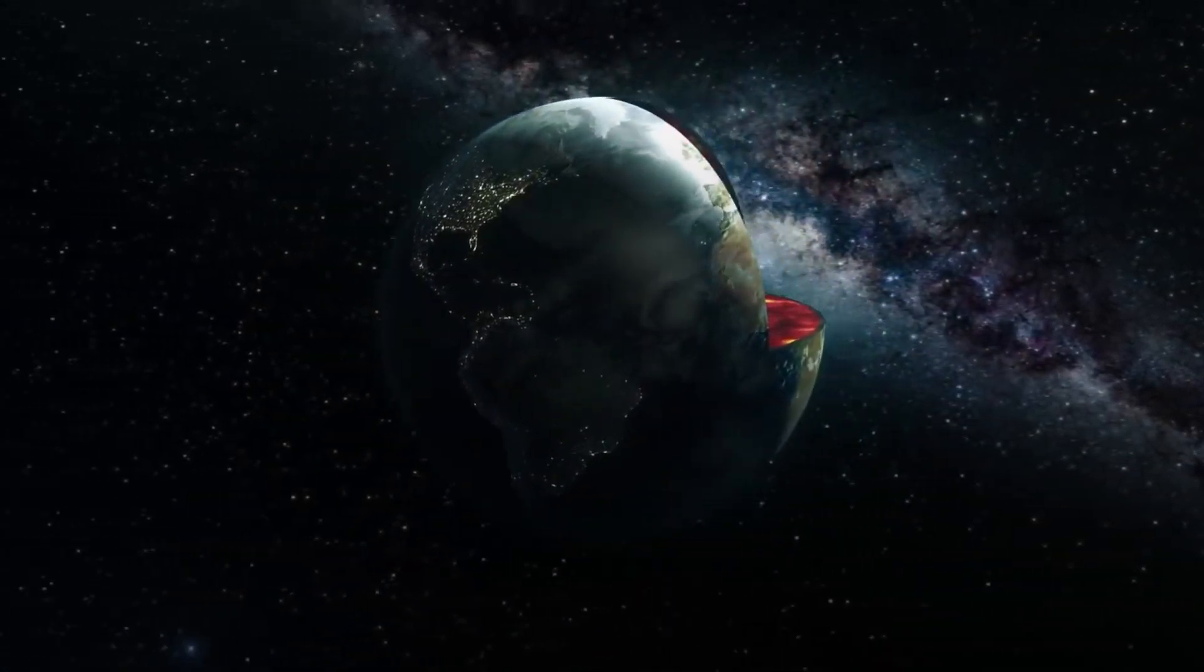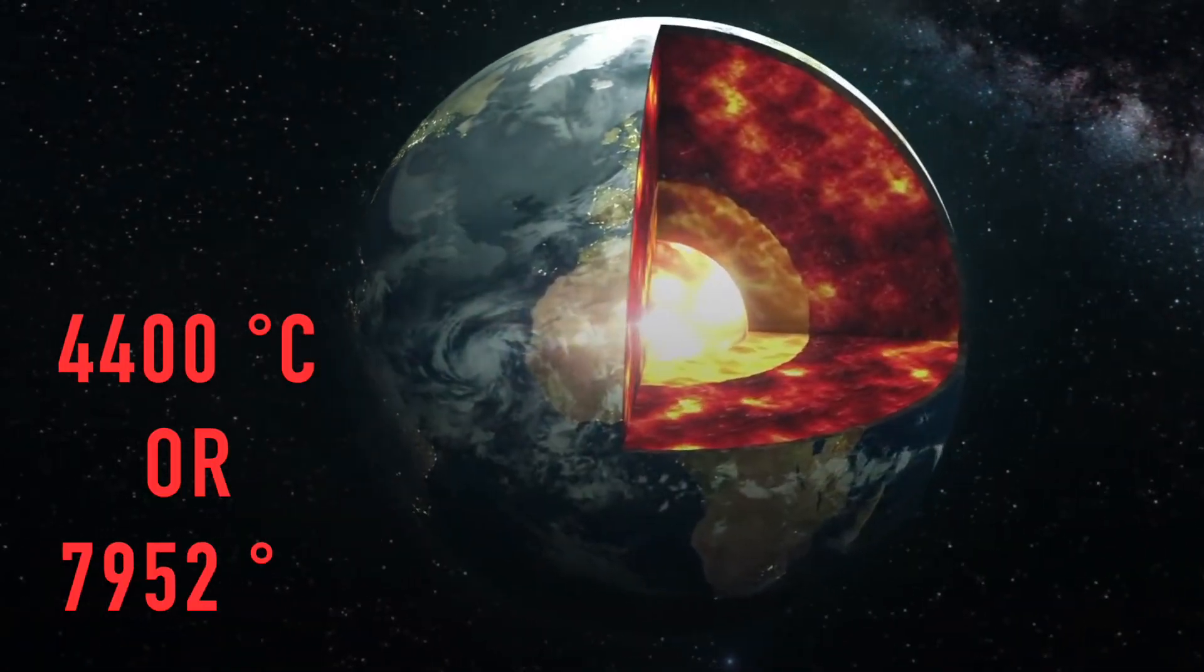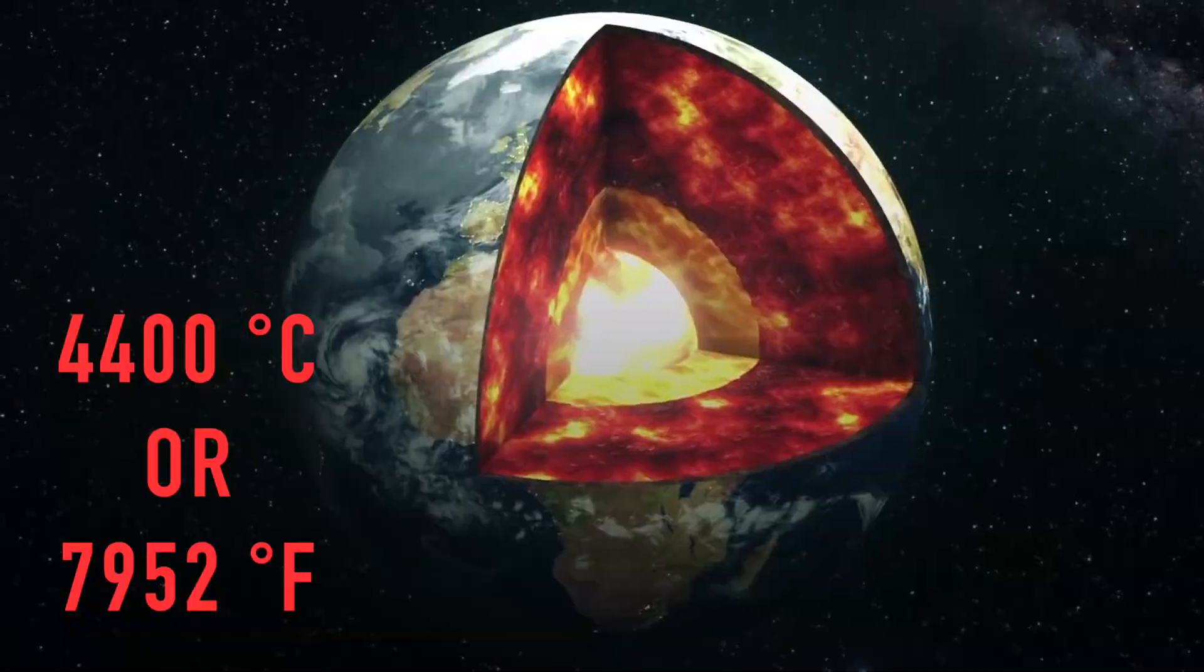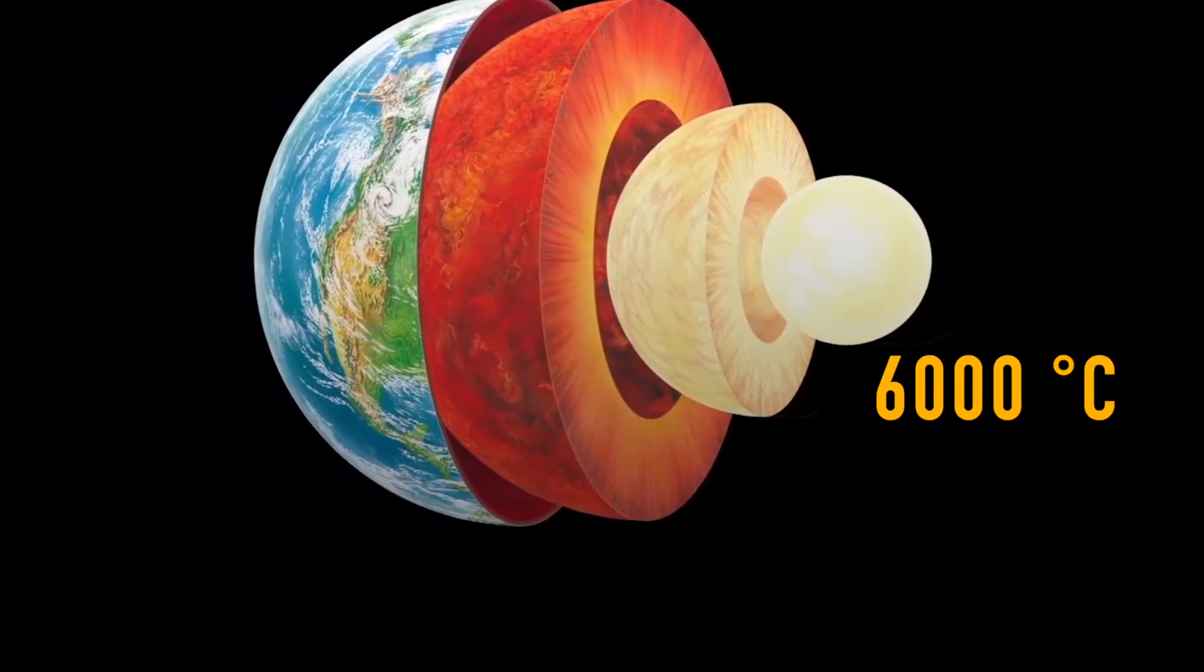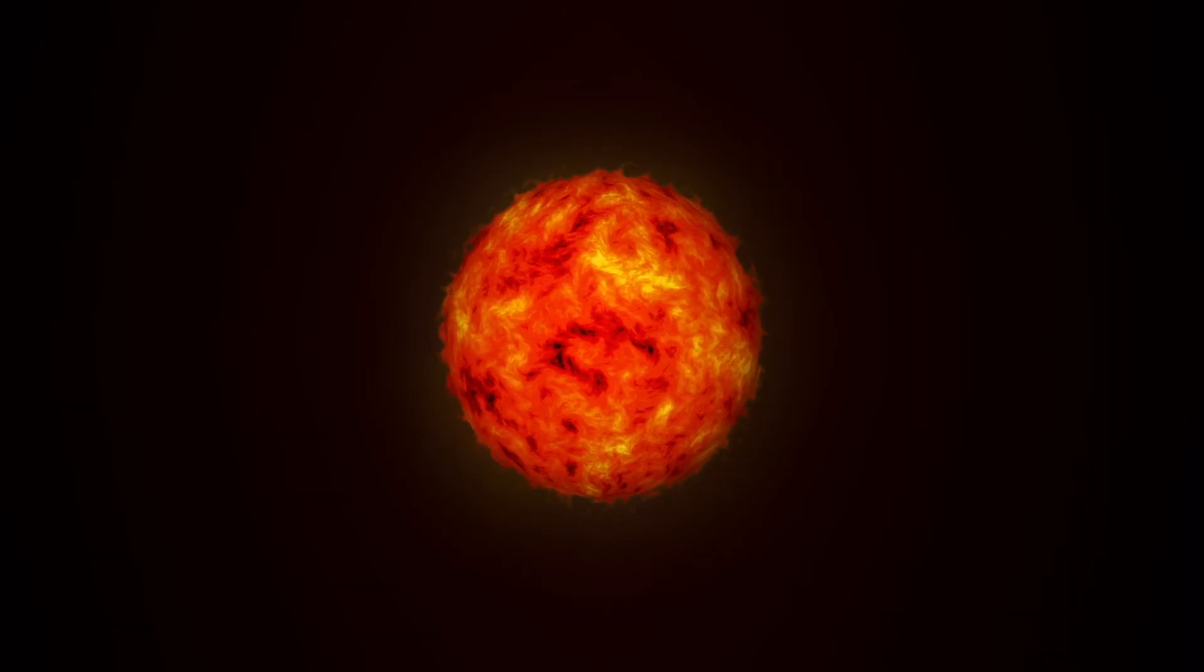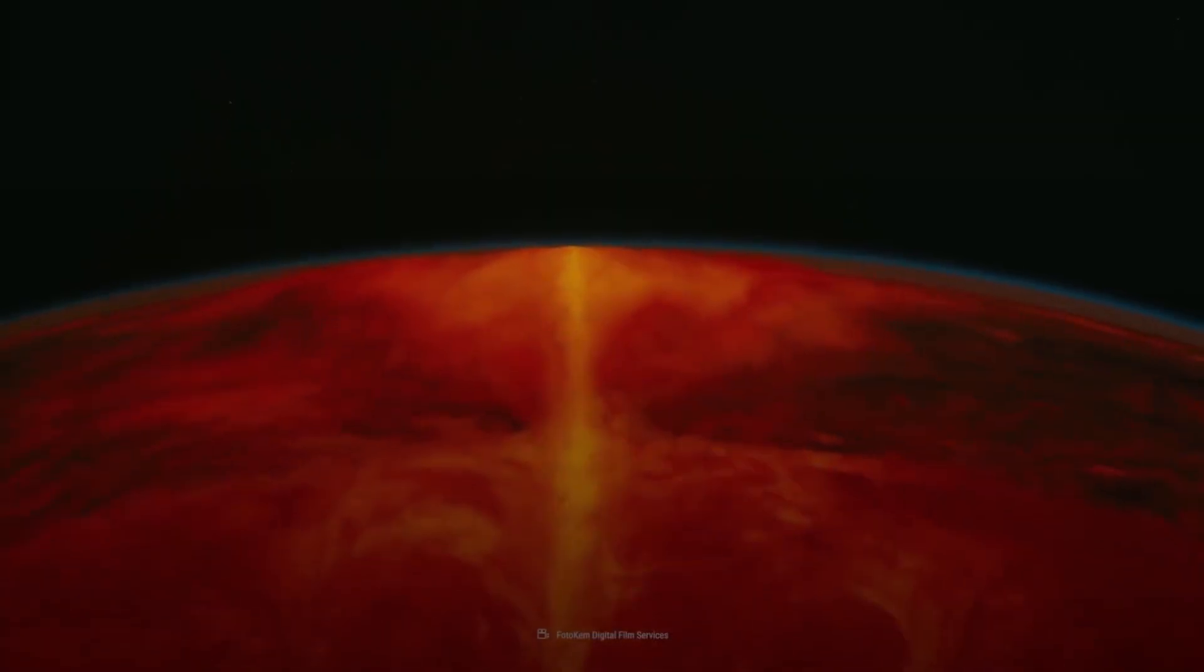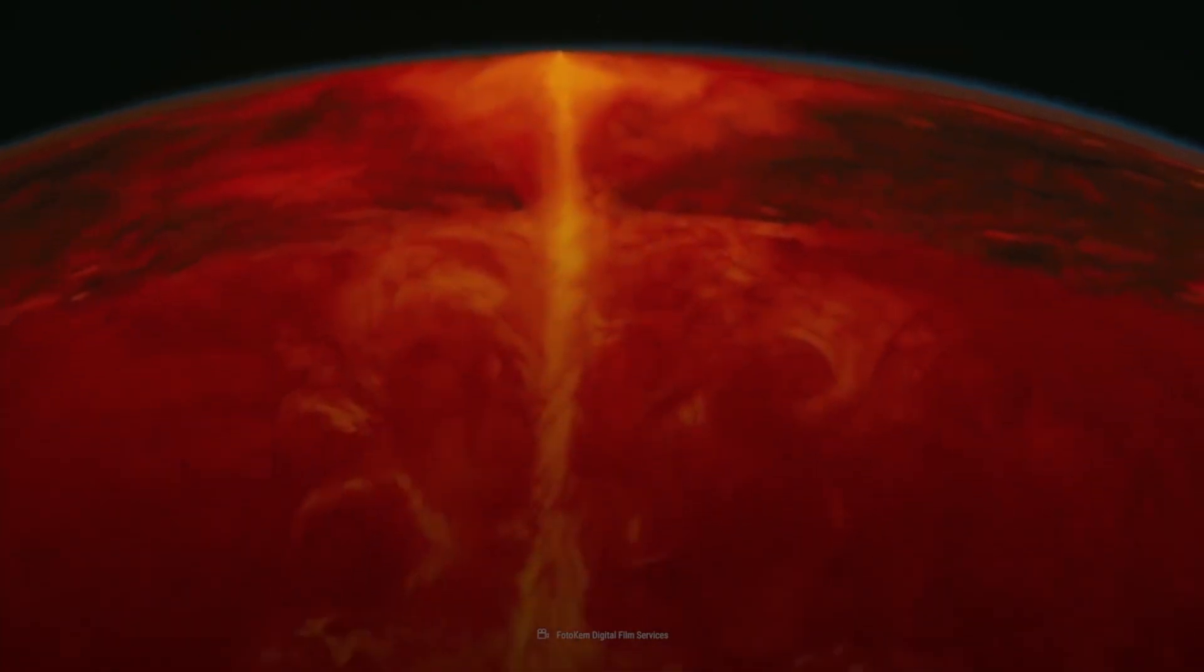The Earth's core temperatures range from about 4,400 degrees Celsius or 7,952 Fahrenheit to about 6,000 degrees Celsius or 10,800 degrees Fahrenheit. It's as hot as the surface of the Sun. It's been that way for about 4.5 billion years.